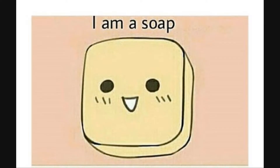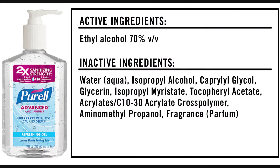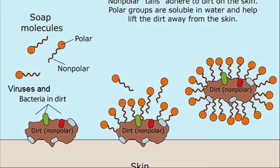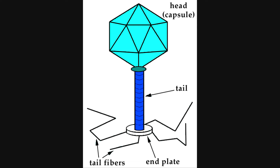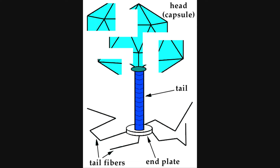For example, soaps and hand sanitizers can render a virus inactive, due to the chemicals within them causing the particles making up the virus's structure to fall apart. This happens almost instantly when these chemicals are in direct contact with the virus.